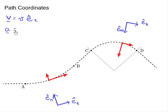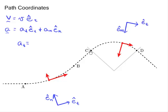The acceleration is a little more complicated — it has two components. It has a component tangent to the path, and also a component perpendicular to the path in the e_hat_n direction. The tangential component is actually quite easy. We have a tangential component of acceleration due to the fact that the car is speeding up or slowing down — it's due to the fact that the speed is changing. So that component of the acceleration is just v_dot. The normal component comes from the velocity vector changing its direction, so let's discuss it more deeply.